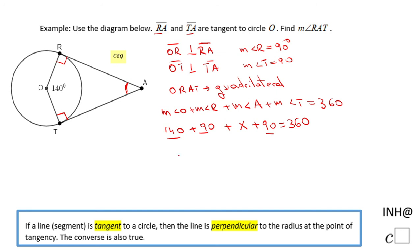320 plus X equals 360. Subtract 320 on both sides and we finish the problem. X is nothing less than 40. And remember, the X is nothing less than the measure of angle A or how it's called in our problem, R A T, which is 40 degrees. And that's it.